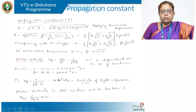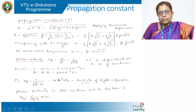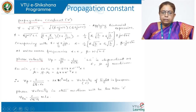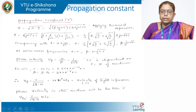The propagation constant gamma = sqrt(Z·Y). Substituting Z and Y values and applying binomial expansion gives individual values for alpha and beta — equating real part to alpha and imaginary part to beta. At microwave frequencies, since R = G = 0, alpha = 0 and beta = ω·sqrt(LC).